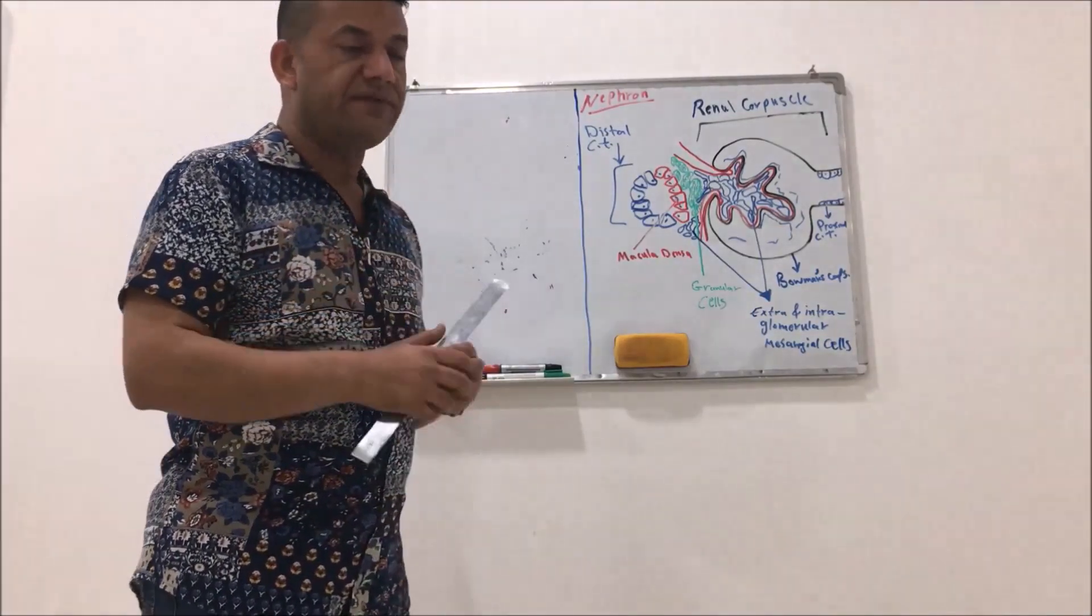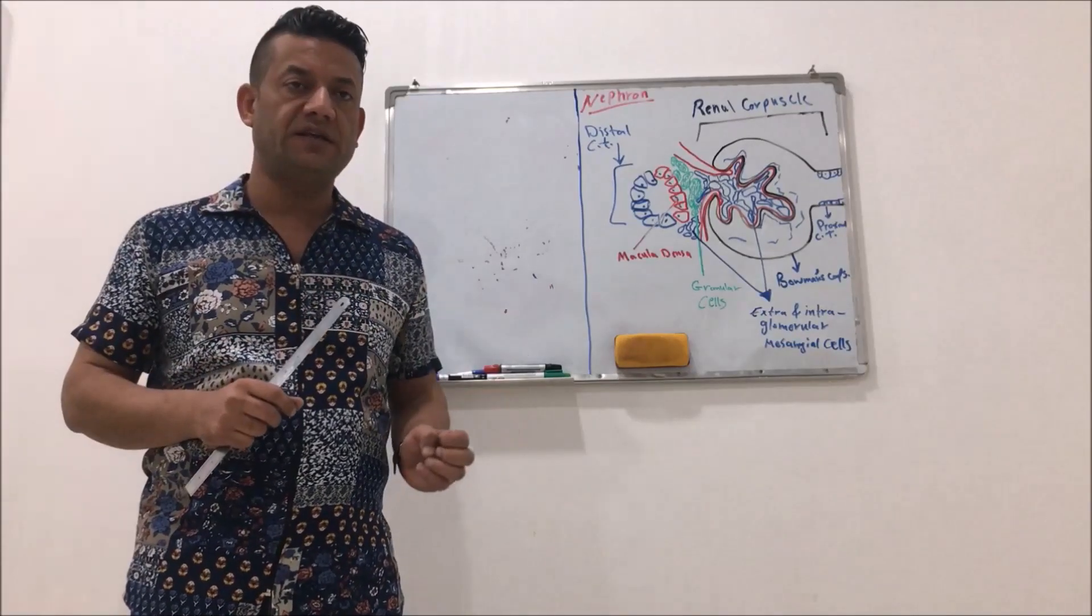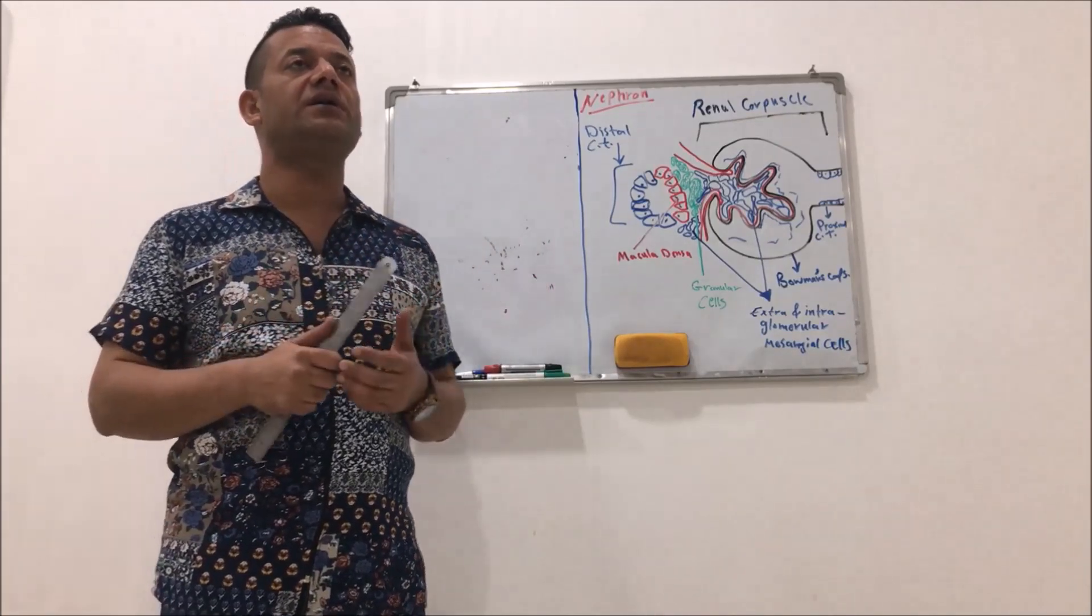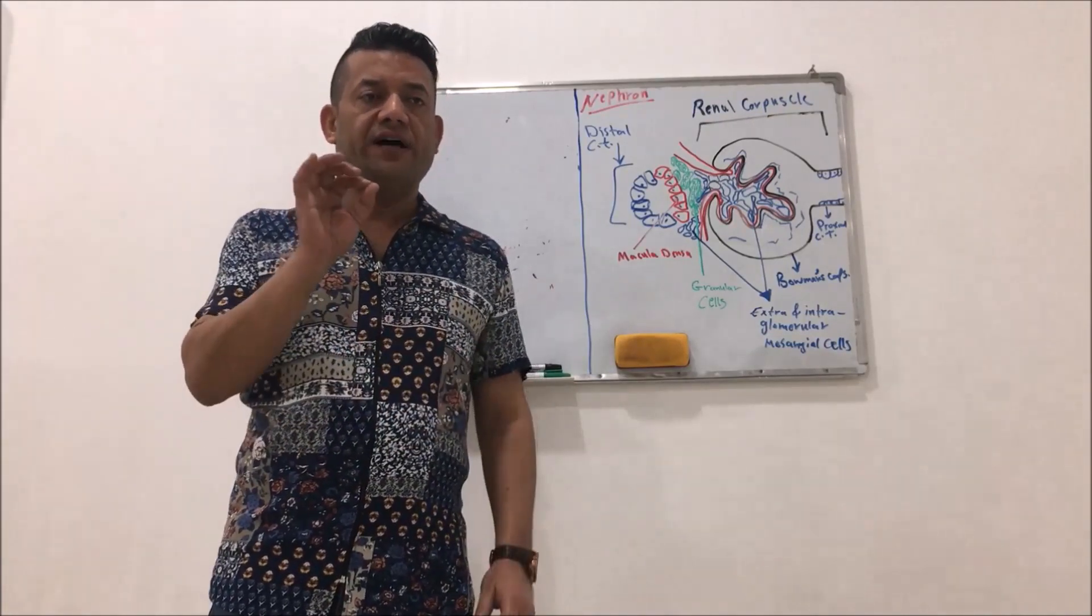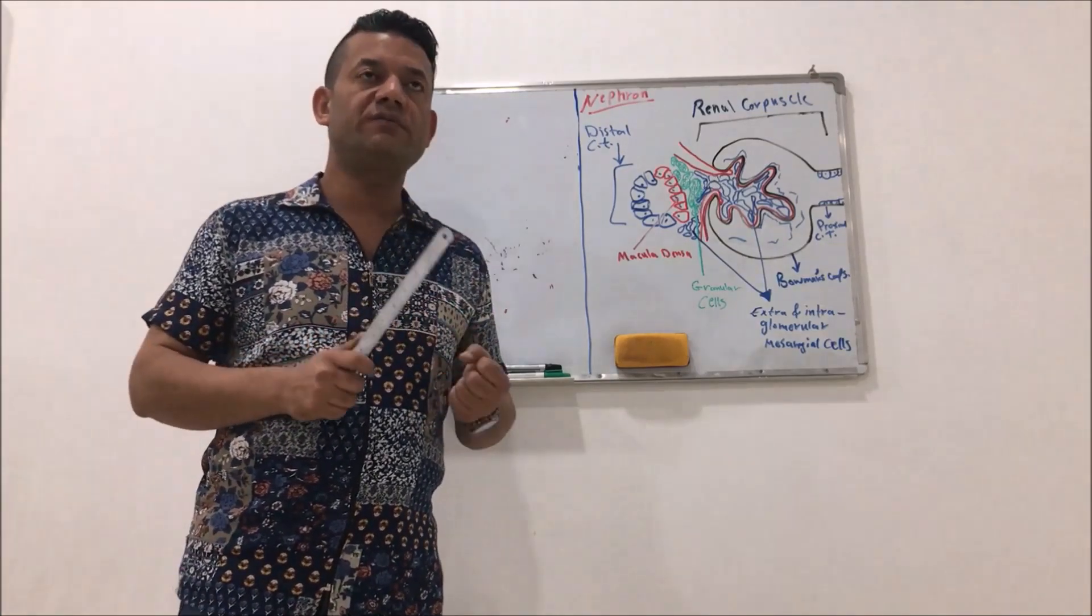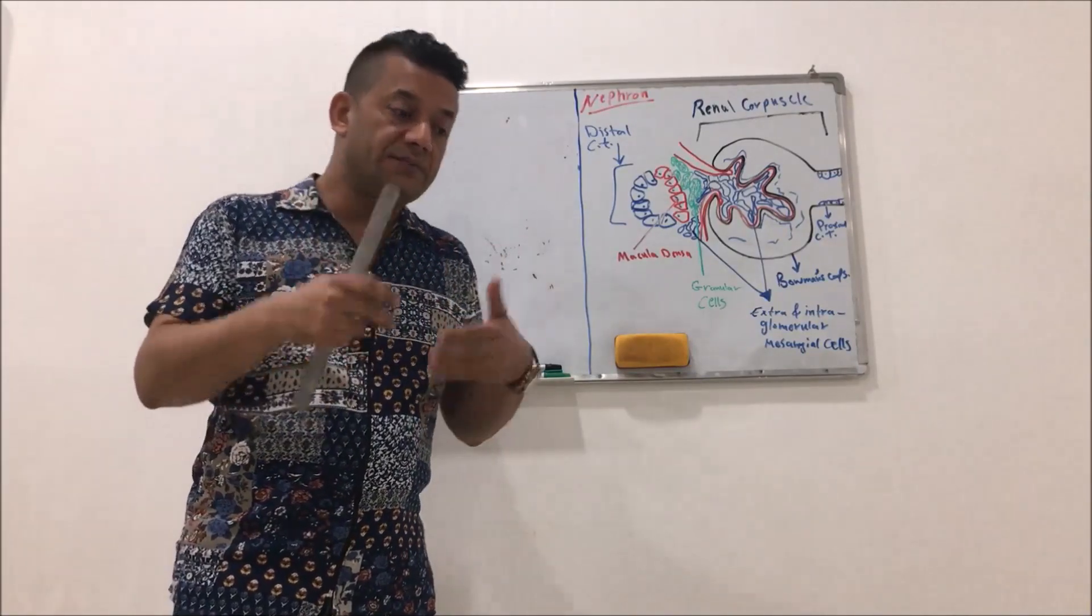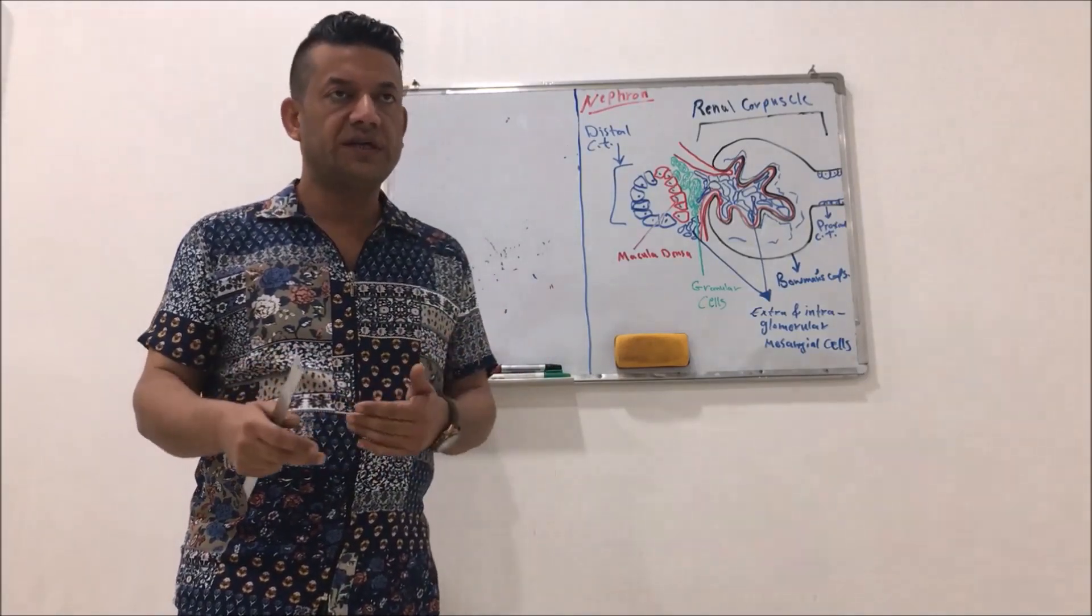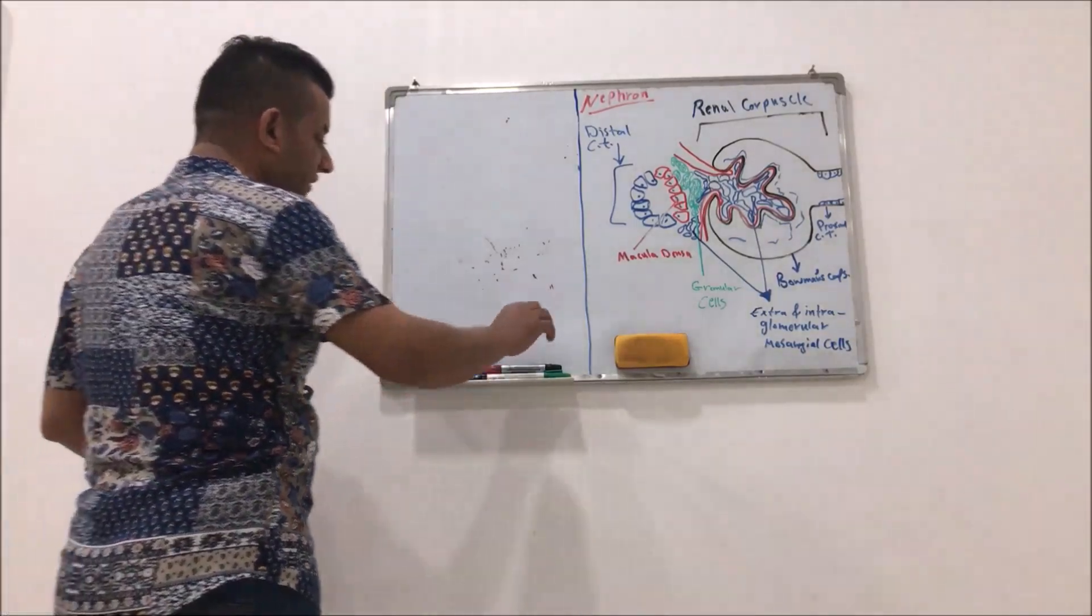So what is nephron? Nephron is the major functional unit of the kidney and the human kidney, each one human kidney usually contains about 10 million nephrons. In fact, the nephron cells themselves are responsible for performing the filtration of blood, reabsorption of important substrates, molecules, water, and excretion of waste products.